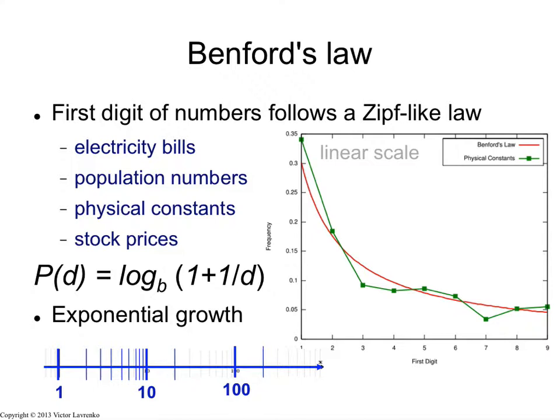Obviously zero is not included. The first time you see this law, you think: well, this is nonsense, this cannot possibly be true — and yet it is true in many natural populations of numbers. So why is this happening? How can we explain it? One possible explanation is the exponential growth of quantities. Benford's law holds true in domains where you have exponential growth of quantities.